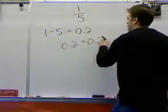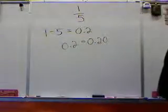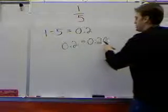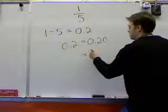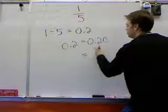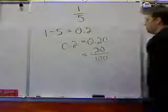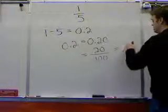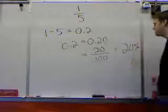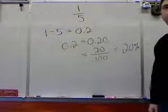Since we know that 0.2 is the exact same as saying 0.20, we can say that this 0.20 can be represented as a fraction as 20 over 100. Therefore, we know that this is in fact 20% because percent means out of 100.